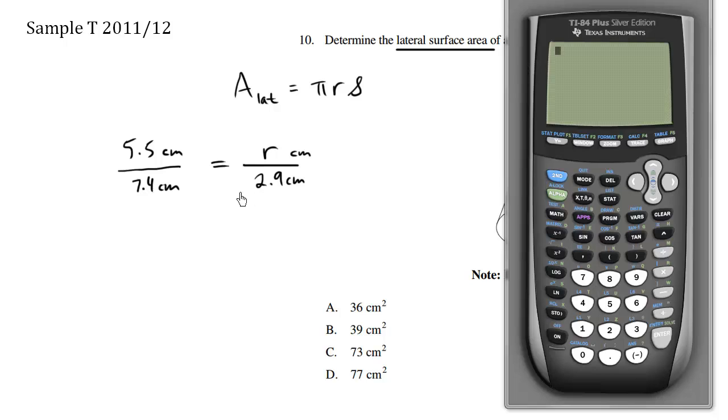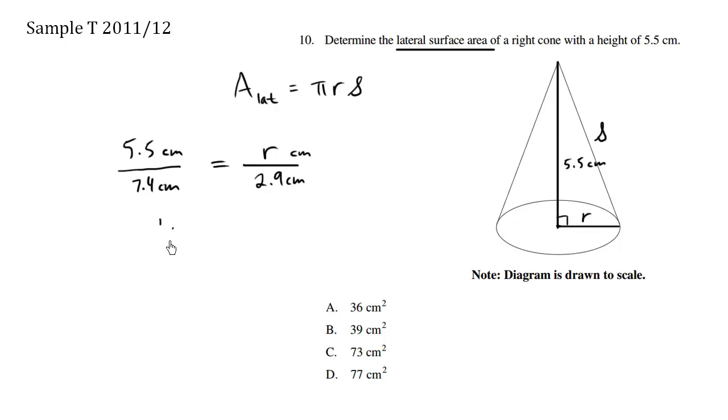So we can now solve for r using cross multiplication. We have 5.5 times 2.9, that's multiplying this way, is equals to this number here. And then when you want to isolate r, we divide by 7.4. So this answer divided by 7.4 gives us r. So r is approximately equals to 2.16 centimeters. We'll write that in, 2.16.